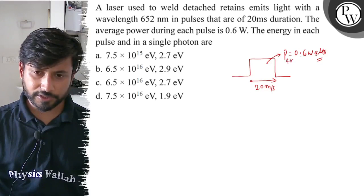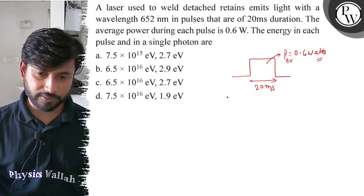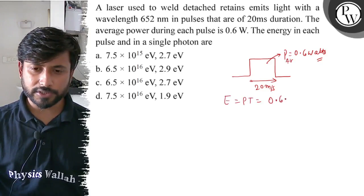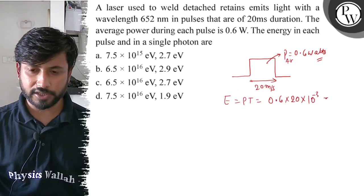The average power is 0.6 watts and time is 20 milliseconds. So energy is P × T. Power 0.6 watts and time is 20 × 10^-3, so energy is...